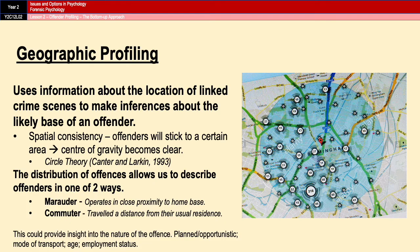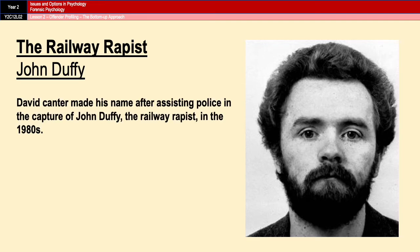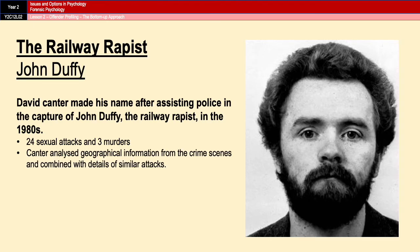There is an example of how geographical profiling was used back in the 1980s with the so-called railway rapist, John Duffy. It was David Cantor who used this, and his rise to fame came after he assisted the police in the capture of John Duffy. Duffy carried out 24 sexual attacks on women and three murders near railway stations in North London. The police brought David Cantor in, who analysed geographical information from the crime scenes and combined that with details of similar attacks in the past supplied by the police. Cantor was able to draw up a profile of Duffy that was surprisingly accurate and led to his eventual arrest and conviction.